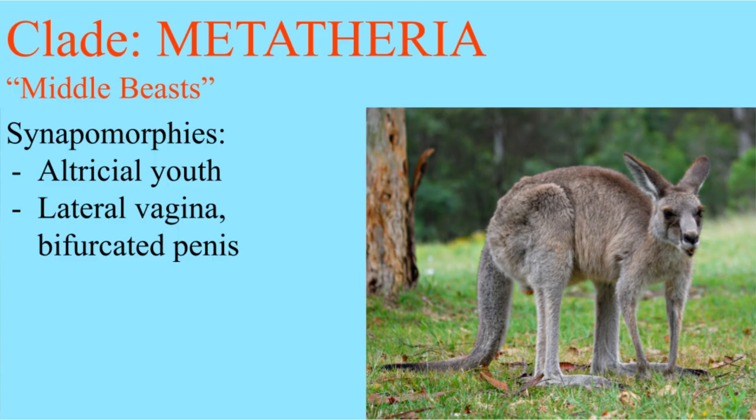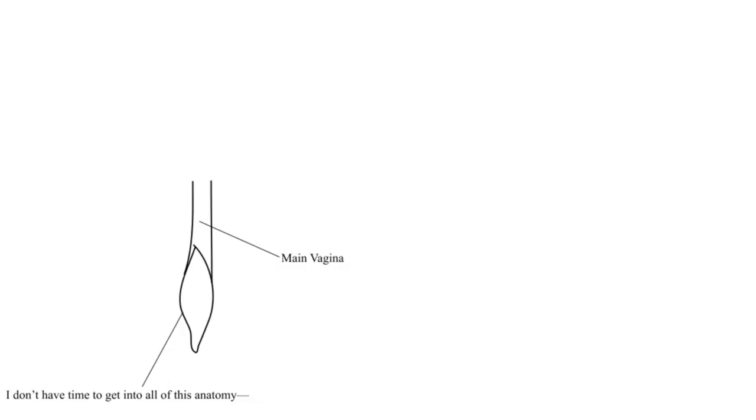I was lying when I said that lips were the grossest thing. There is one more. The metatherians have what's called a lateral vagina, meaning that the females have three vaginas, two for insemination and one for childbirth. In keeping, the males have a bifurcated penis, one that ejaculates out of two holes.